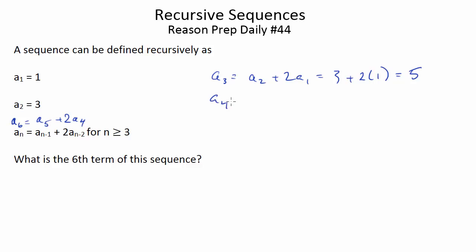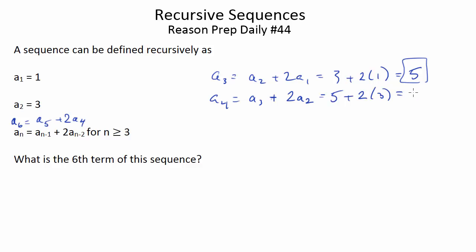Now, the 4th term is going to be the 3rd term plus 2 times the 2nd term. We're just moving ahead one unit. So, this is going to be the 3rd term — we just found it — and we're going to multiply the 2nd term by 2 and add them together. It's 5 plus 2 times 3, because 3 is the 2nd term. That gives us 11.